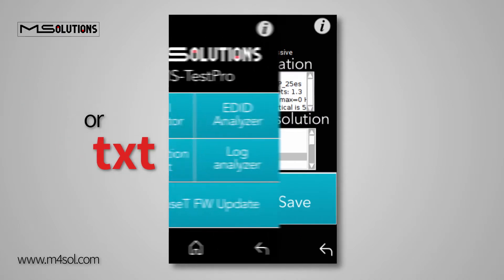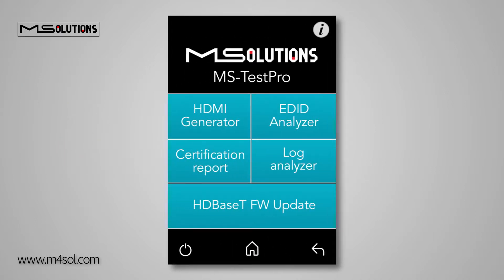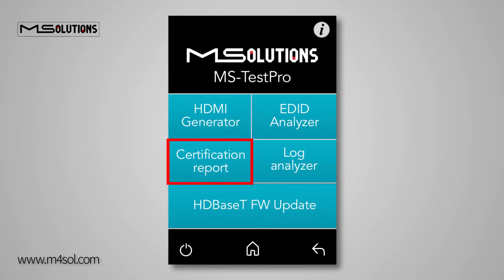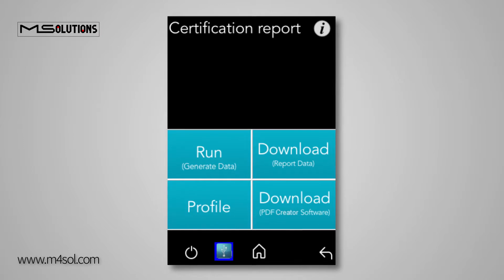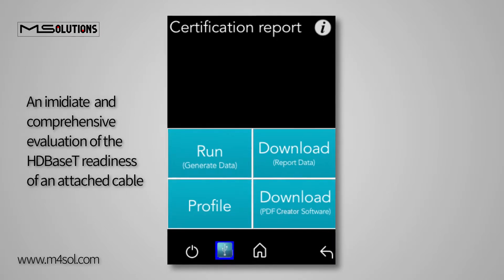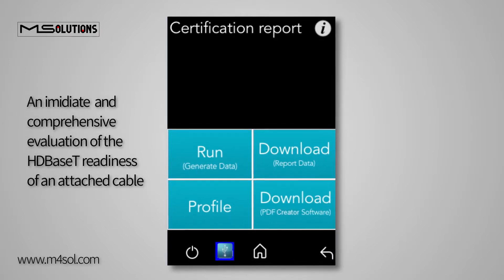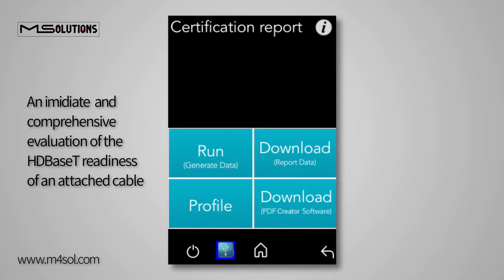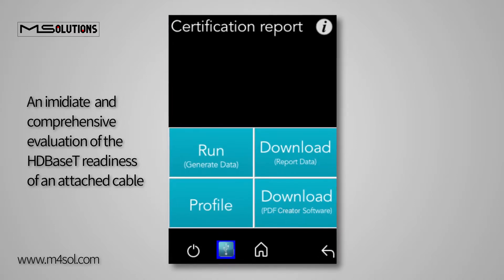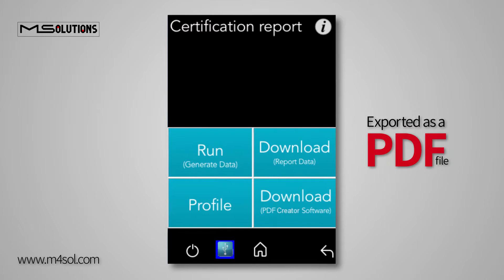Let's go back to the Tools menu and have a look at the Certification Report screen. The exclusive MS Test Pro Certification Report provides an immediate and comprehensive evaluation of the HDBaseT readiness of an attached cable and exports the results to a PDF file.